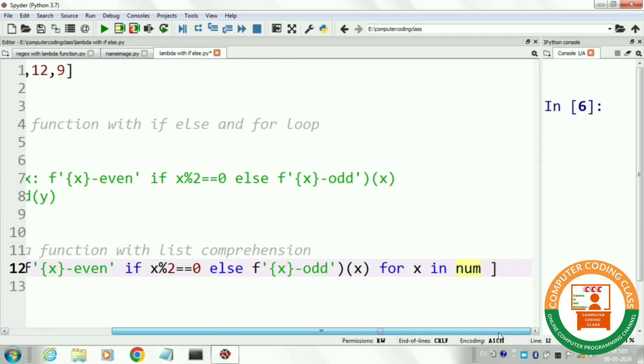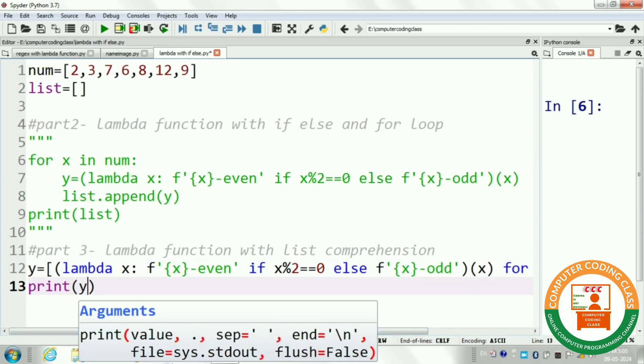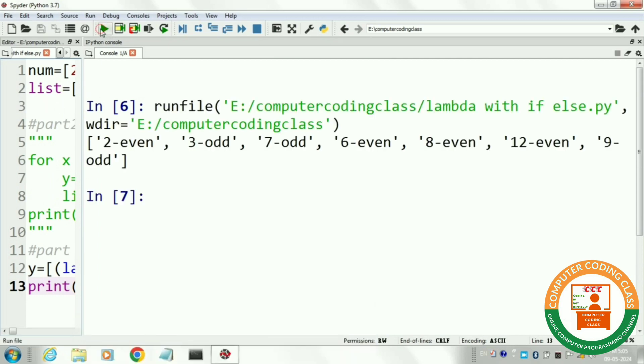Next, print our python list y and then run the program. In output window, it is showing a list of even and odd numbers.